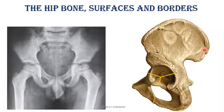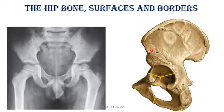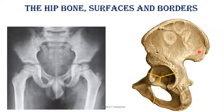We will see the medial border when we come to the inner surface. Along the anterior border, this is the anterior superior iliac spine and this is the anterior inferior iliac spine. The posterior superior and the posterior inferior iliac spines will be shown more clearly on the inner surface. We can see the anterior, middle, and posterior gluteal lines, and these are the areas of origin of the gluteal muscles: the minimus, the medius, and the maximus.